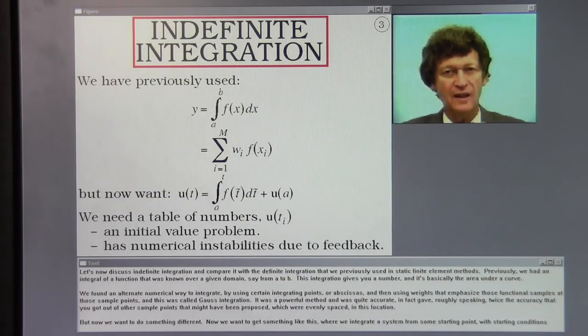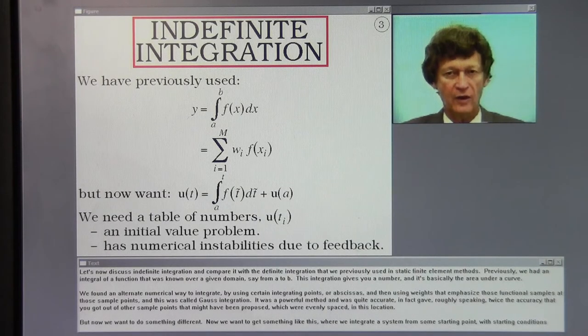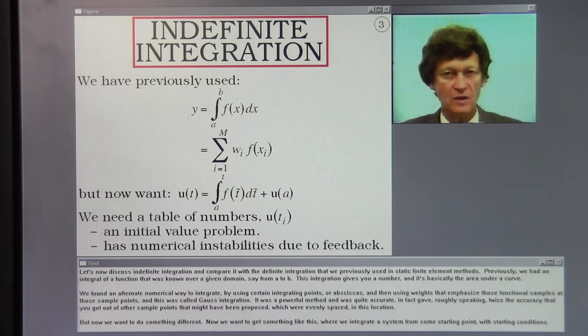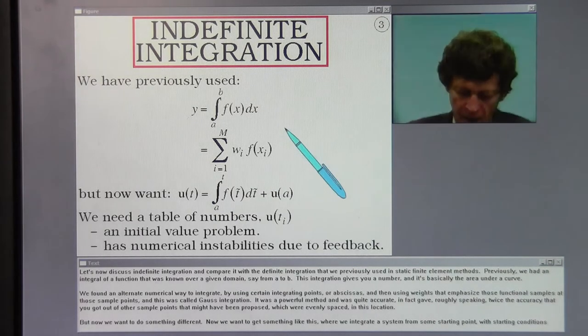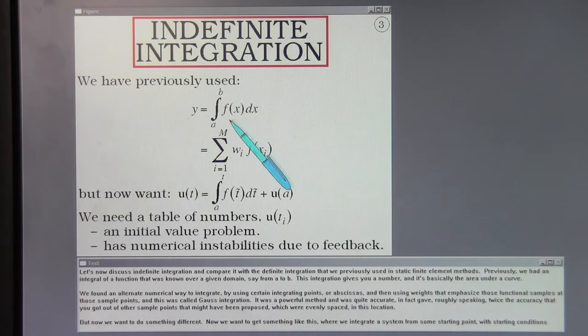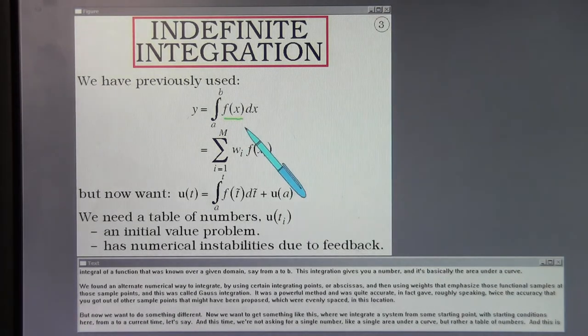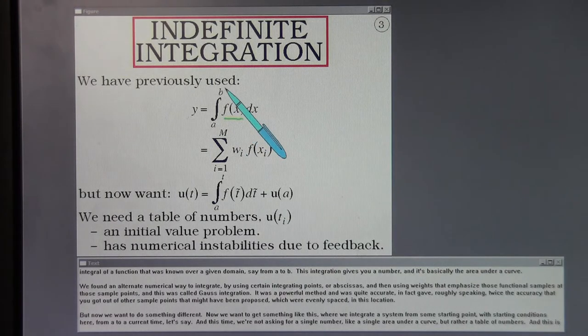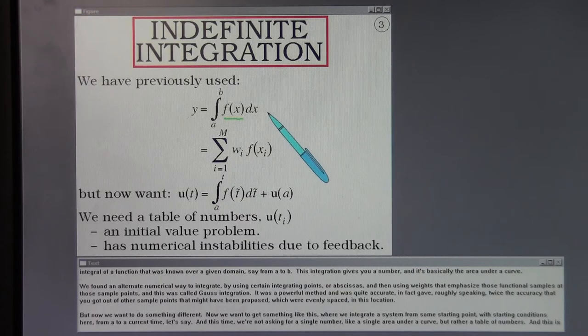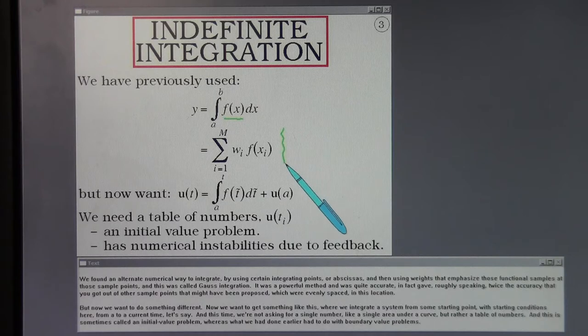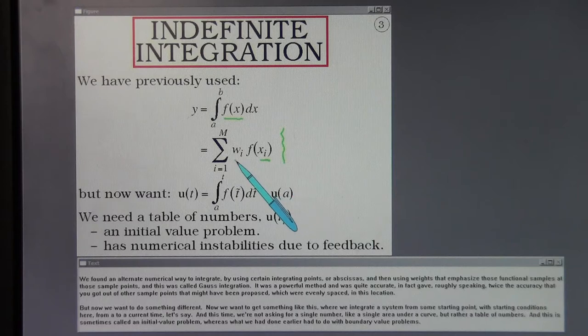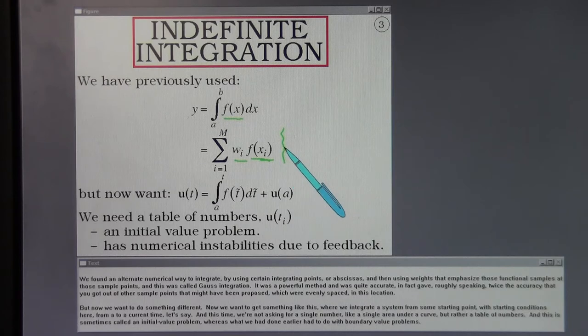Let's now discuss indefinite integration and compare it with the definite integration that we previously used in static finite element methods. Previously, we had an integral of a function that was known over a given domain, say from A to B. This integration gives you a number, and it's basically the area under a curve. We found an alternate numerical way to integrate by using certain sample points, or abscissa, and then using weights that emphasize those functional samples at those sample points.